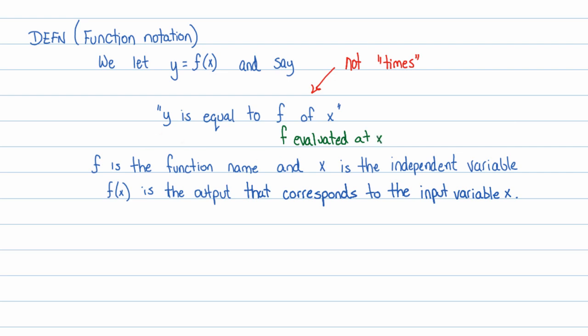f is a function name. It doesn't have to be f. In fact, often you'll find that I will use function names that represent the situation. So if we're talking about cost of something, then I'll use c of x. Or I might even use the whole word, cost of x. x is the independent variable. f of x, that whole notation, is the output that corresponds to the input variable x. This will probably need a lot more explanation, and usually examples help out quite a bit.